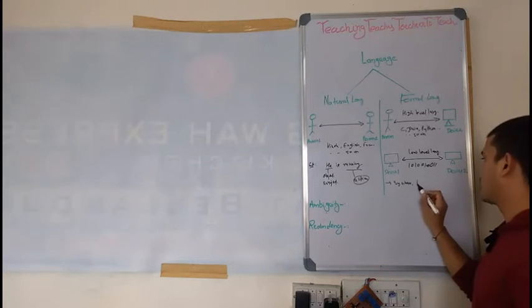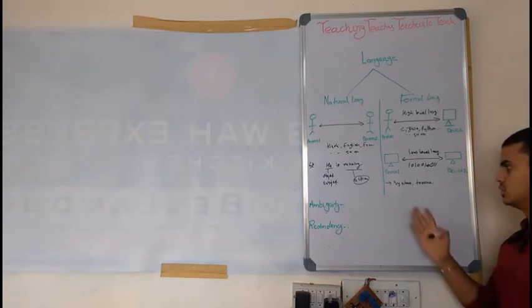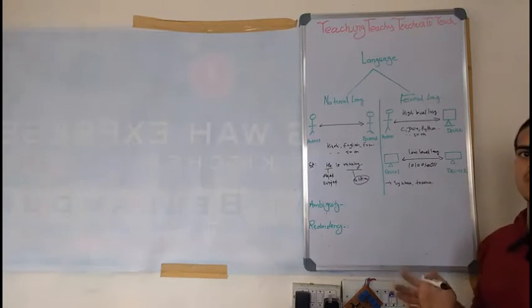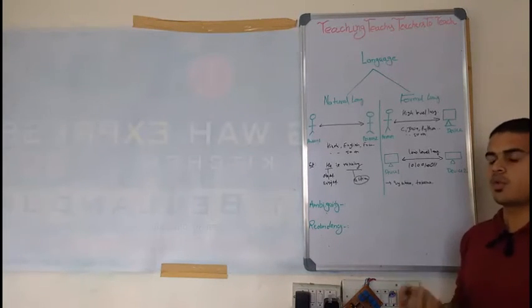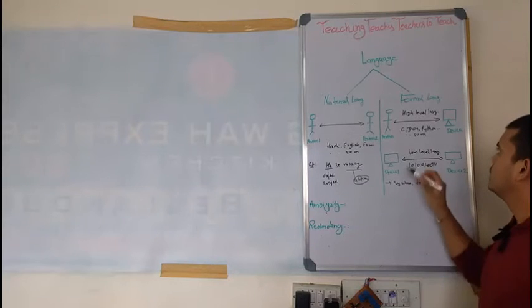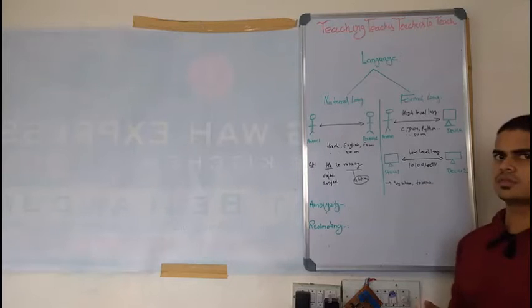So for that we have some syntax, semantics, tokens, and all these things. I will not discuss briefly here. These are the things we have to consider when we are going to make any programming language or learn the programming language. So this is the category of formal language. Now two parameters are there.